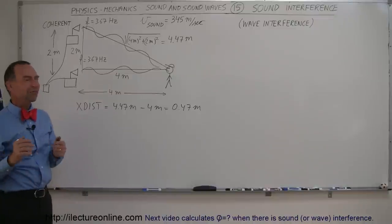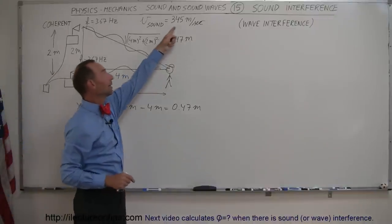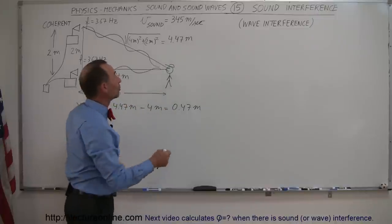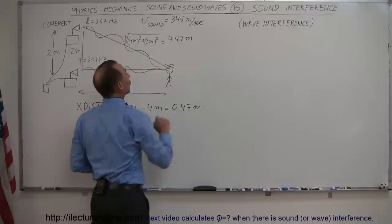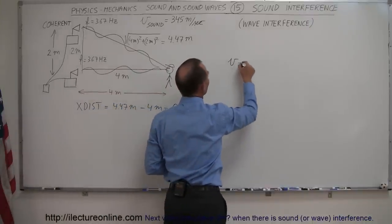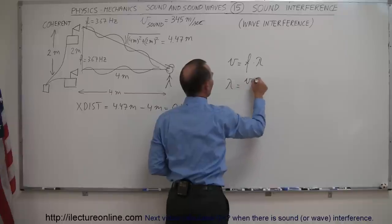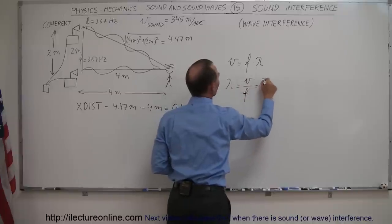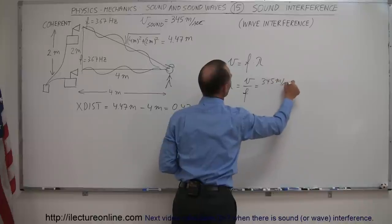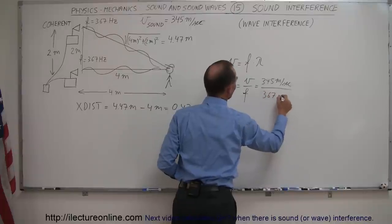So now let's try to find out what the wavelength is of these waves, assuming that in this particular condition, maybe at some room temperature, the speed of sound is 345 meters per second. The velocity is equal to the frequency times the wavelength, so the wavelength is equal to the velocity divided by the frequency, so that's 345 meters per second divided by a frequency of 367 hertz.